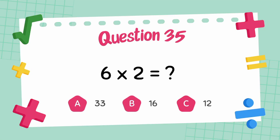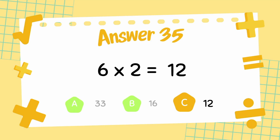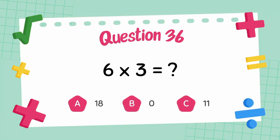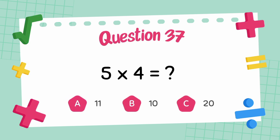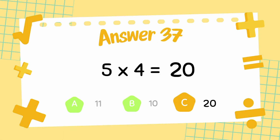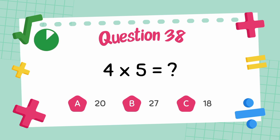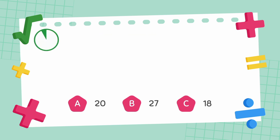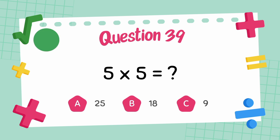What is 6 multiply 2? The answer is 12. What is 6 multiply 3? The answer is 18. What is 5 multiply 4? The answer is 20. What is 4 multiply 5? The answer is 20. What is 5 multiply 5? The answer is 25.